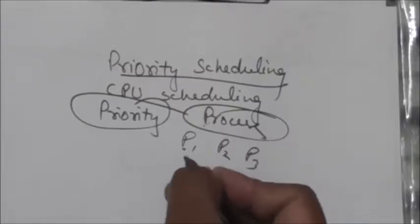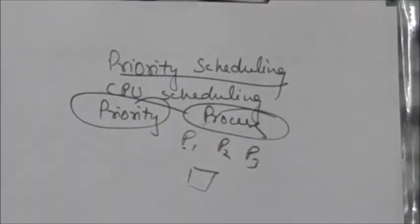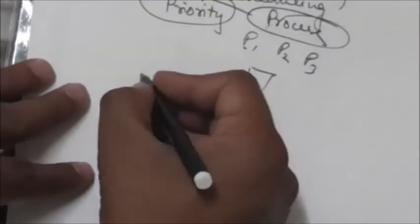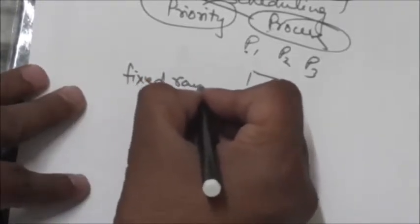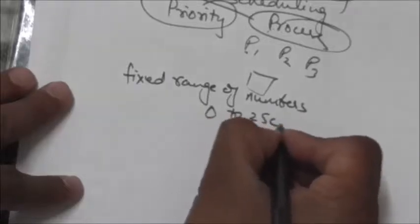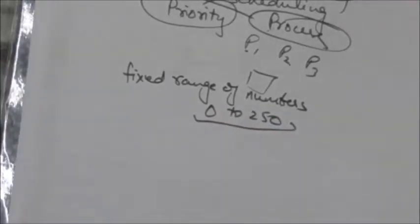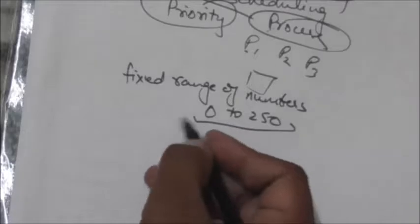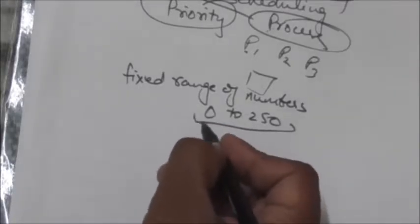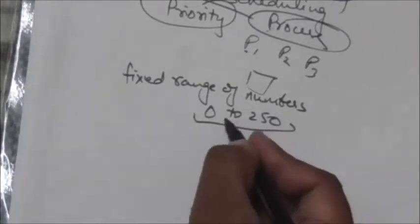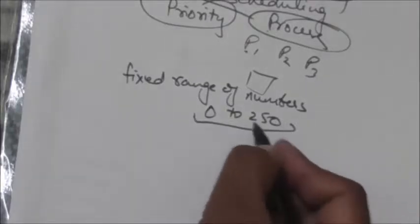Generally, priorities of processes are indicated by a fixed range of numbers like 0 to 250. There are two possibilities: in some systems, low numbers represent low priority, while in other systems, low numbers represent high priority.